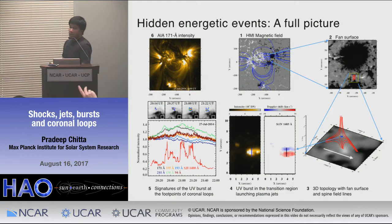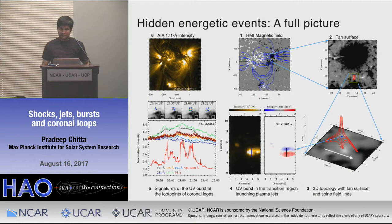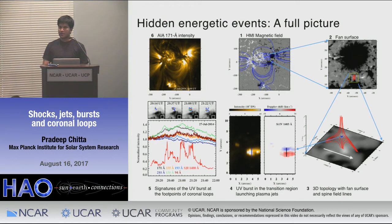Question from the audience: you said the null point is at 500 kilometers, but the spectral line forms much higher — so you would expect to see only one side of the jet. Response: the reconnection there has heated the plasma sufficiently such that these transition region lines already form at those heights, because you have increased the plasma temperature significantly.